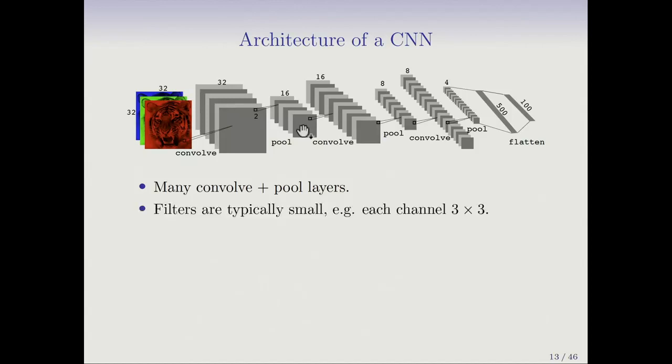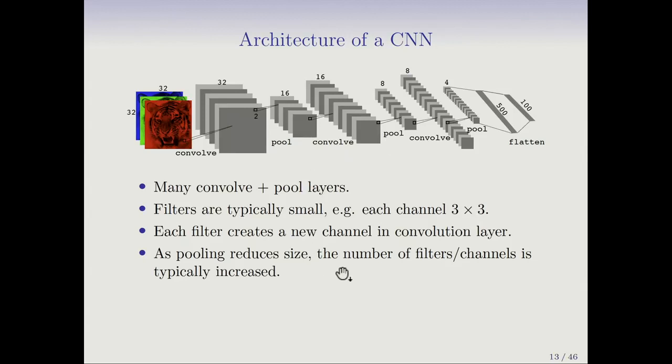We then do a max pool layer. The filters are typically small, example three by three. Each filter creates a new channel in the convolution layer. In this case, we see eight. As pooling reduces the size, the number of filter channels is typically increased. We had eight here. We still have eight here, but they've dropped in size to half the dimensions in each direction. Now we have filters that get applied to these. The filter has to have eight channels as well. We've got eight channels here. Each filter has eight channels.